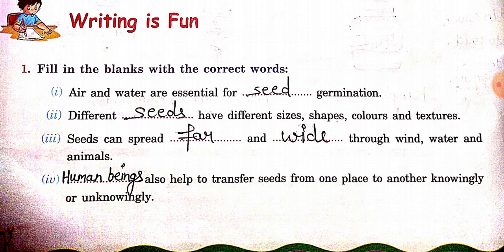Second: different seeds have different size, shapes, color and textures. The seeds are different — sizes are different, colors are different, textures are different — smooth and rough.